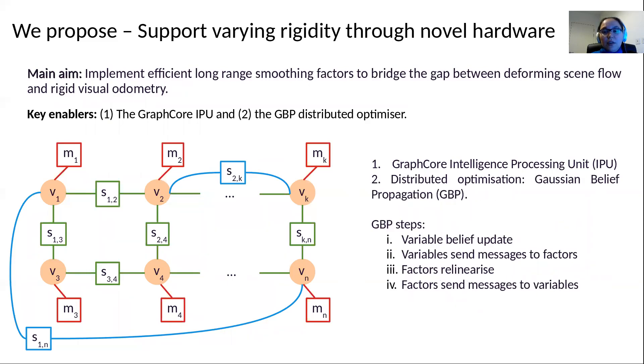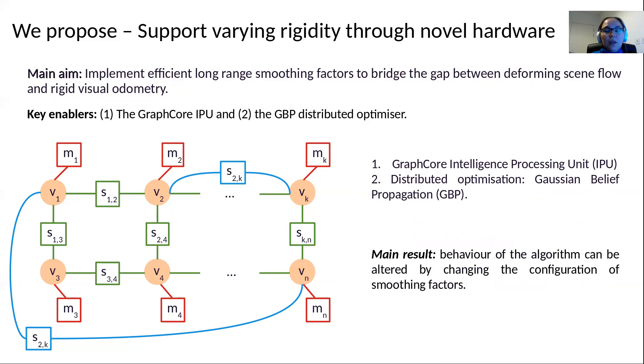To solve these factor graphs efficiently, we make use of distributed optimization and the Gaussian belief propagation solver. This is a local solver and each variable will locally estimate its own motion. It will then send a belief of its motion to the neighboring factors. The factors will re-linearize and again send messages to their variables about their estimated motion. The result of this approach is that by altering the configuration of the smoothing factors, we can formulate graphs to tackle visual odometry, purely rigid flow, and flow with varying rigidity.